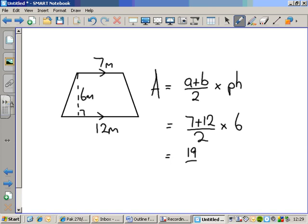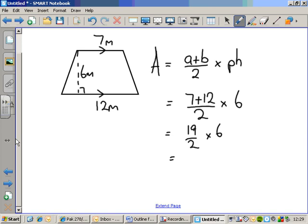Okay, seven plus twelve is nineteen. So we're going to do nineteen over two times by six. Nineteen divided by two. Well, half of nineteen is nine point five, isn't it? Nine and a half, if you like. And we have nine point five times six.